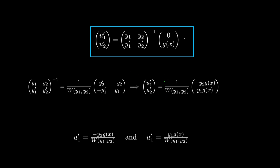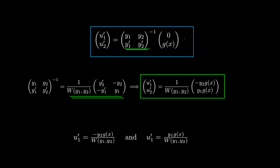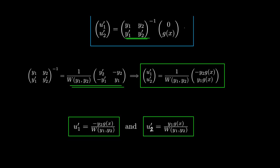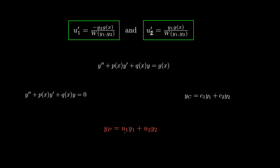Using that formula and replacing the matrix inverse by its expression, the matrix equation reduces to this. Writing it out component-wise gives us these two equations at the bottom. There is a slight error — this is supposed to be a two. These two equations give us the conditions on u1 and u2, and we want a particular solution of this specific form.